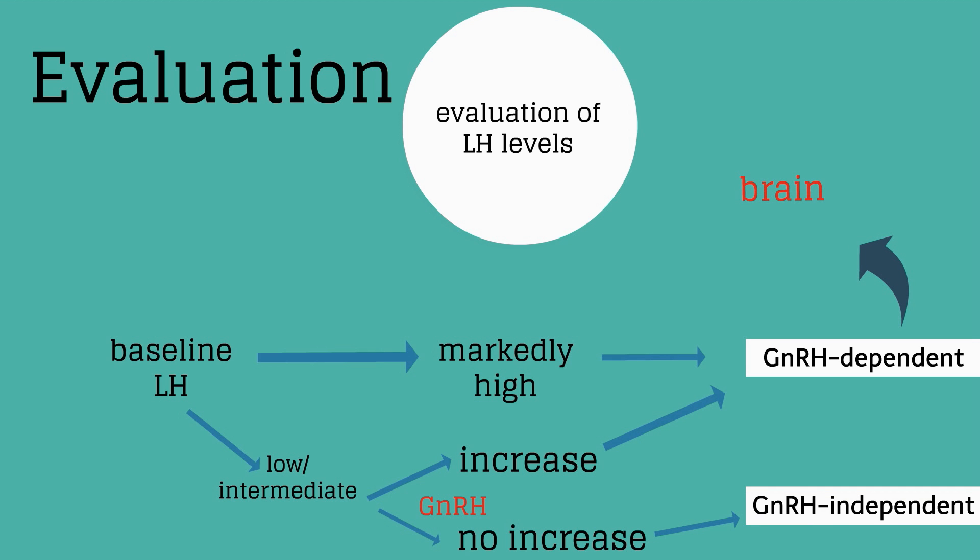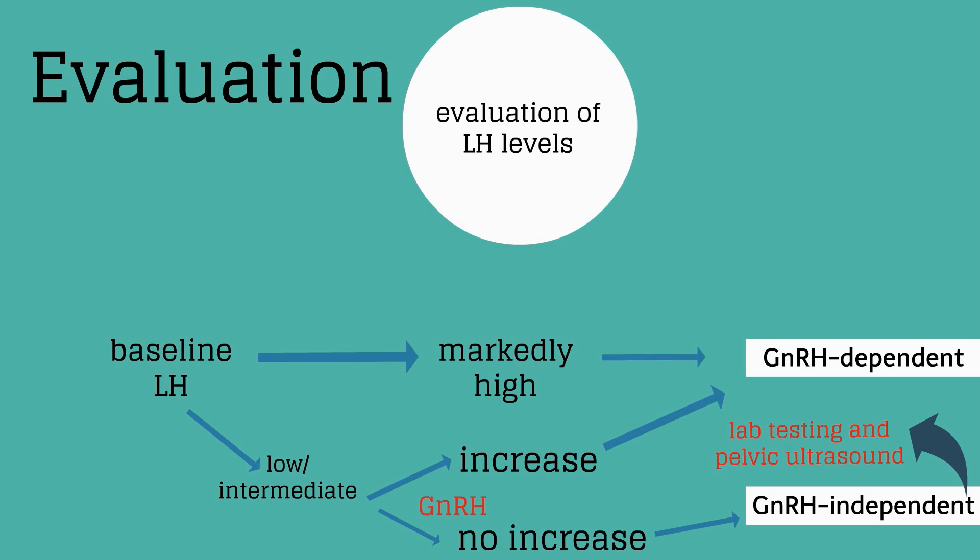The next step in evaluating a GnRH-dependent cause of precocious puberty is brain imaging. For a GnRH-independent cause, evaluation involves looking for a peripheral cause with laboratory testing and pelvic ultrasound.